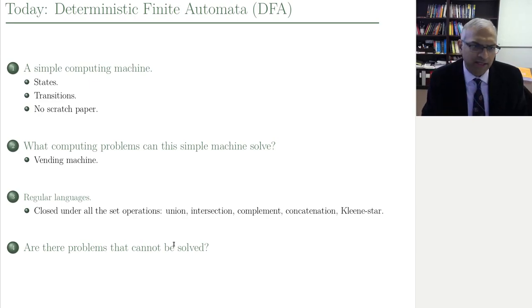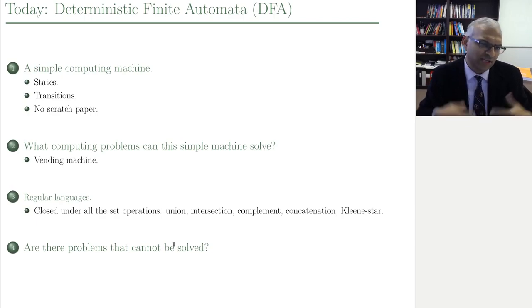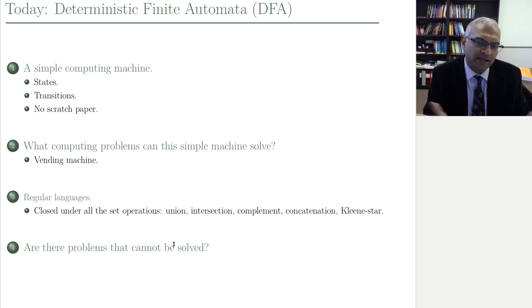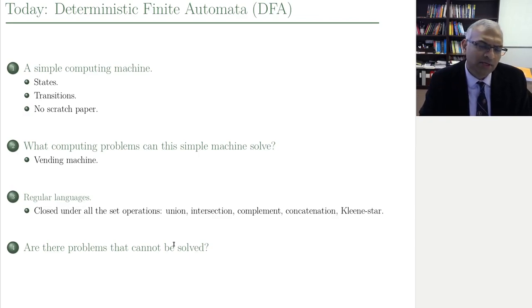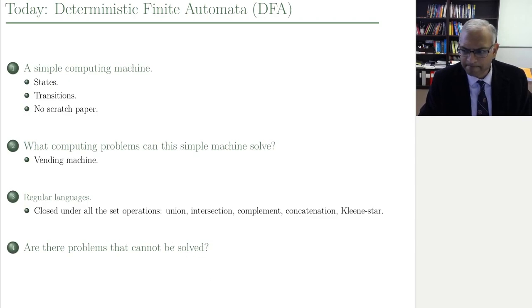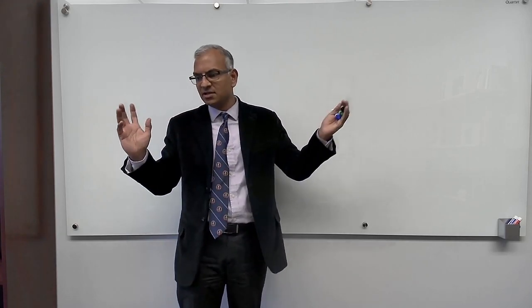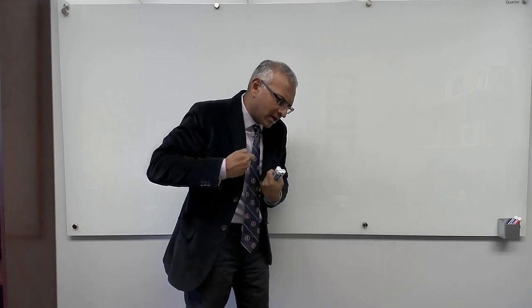The second question is the focus of this course. We now have our first model of computing — this finite state machine — which we're going to describe today. We will see that we can solve lots of great problems, and if you give me more resources I can solve harder and harder problems. But we will eventually confront a situation where some problems cannot be solved no matter how many resources you give me, which leads us to ask: is there a deficiency in this machine? Is there some other superior kind of machine? So the plan for today: we will introduce the deterministic finite automaton.